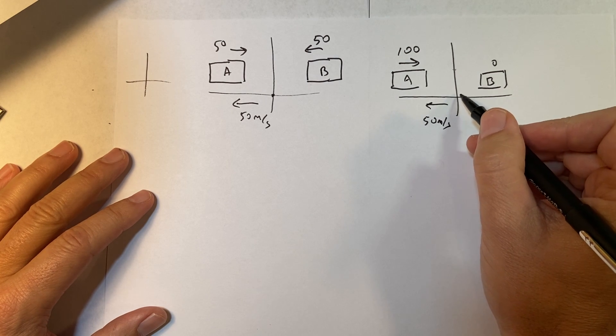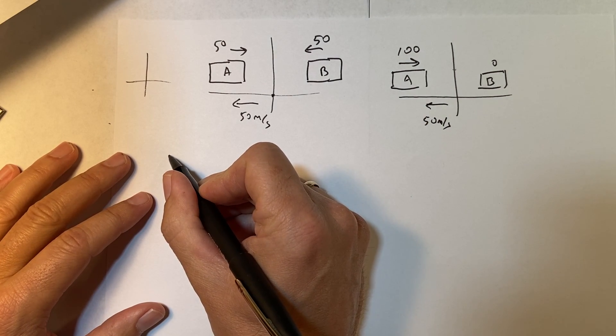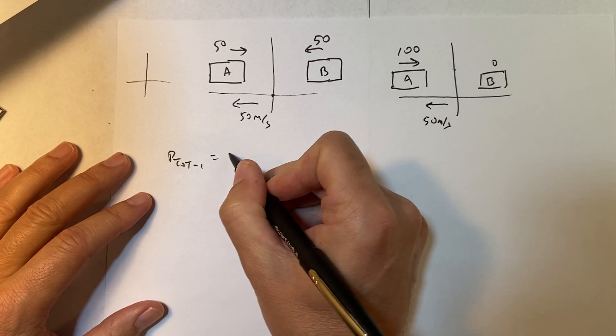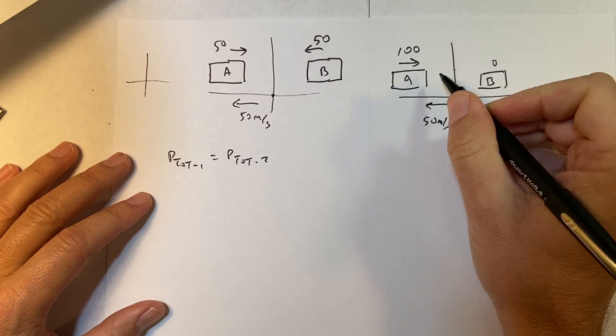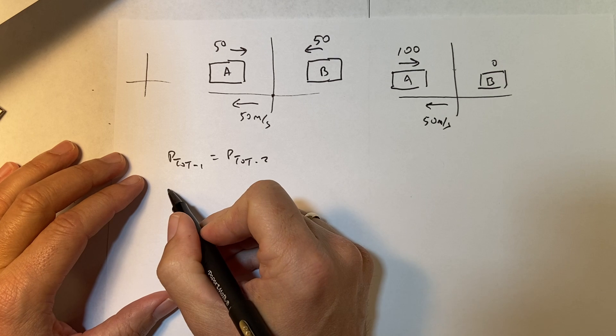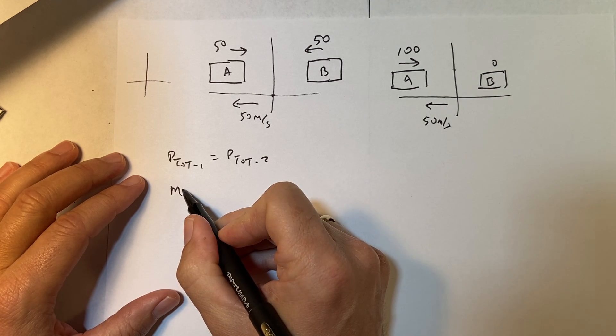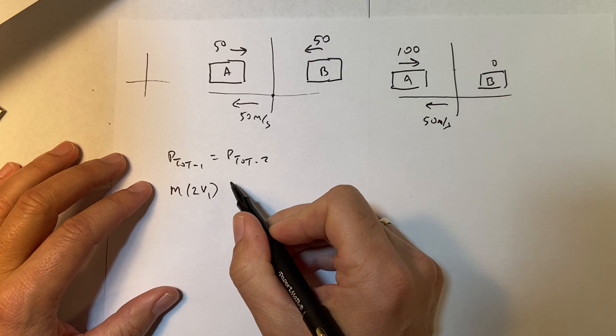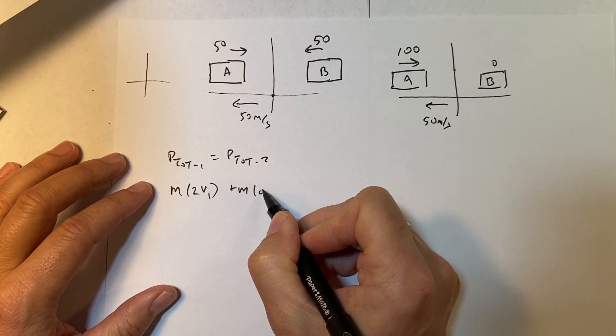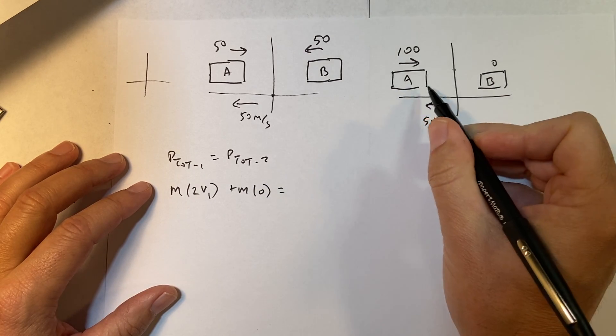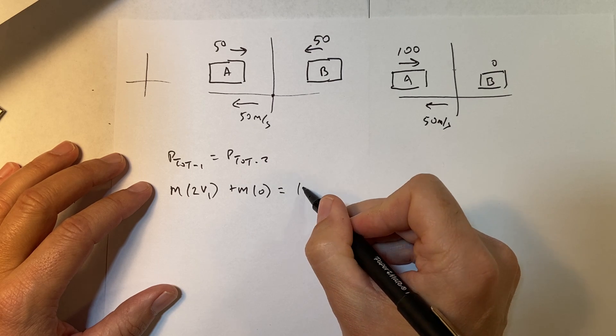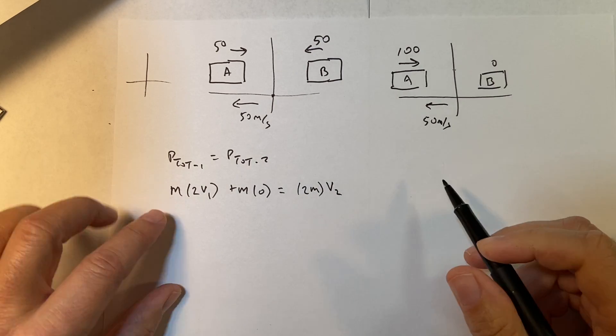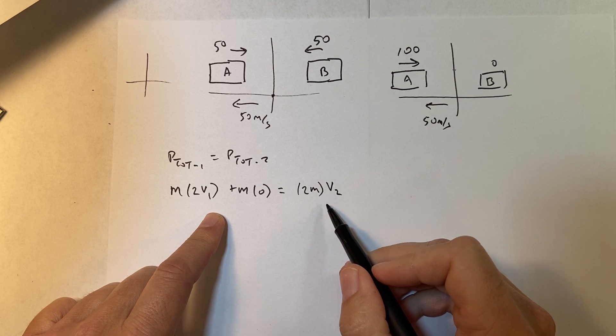So let's do this problem, which is, in this coordinate system, I have this one moving at 100, and that one's not moving at all, before the collision. And then after the collision, we let it do whatever it wants. Because that's the same thing. That's the same thing as this. So let's start with momentum in this coordinate system. So I'm going to say, p total 1 equals p total 2. So I have, before the collision, I have M 2V1 plus M times 0 equals, now they stick together. I'm going to say they stick together. So this is going to be 2M times V2. Now you see here that V2 is not 0.